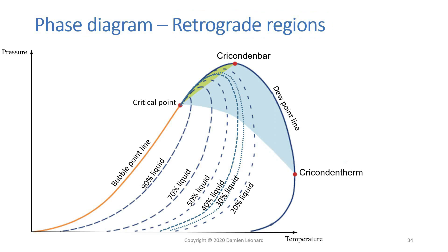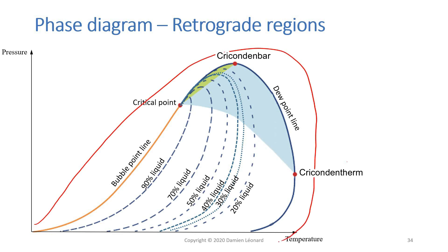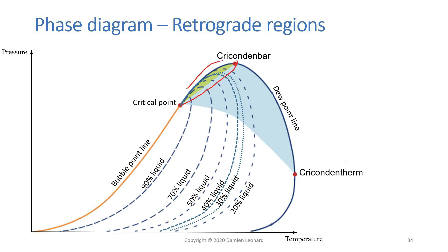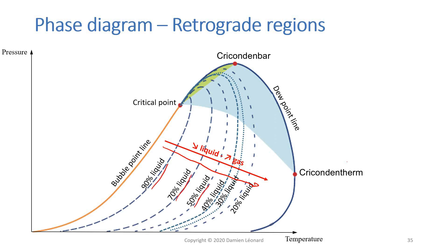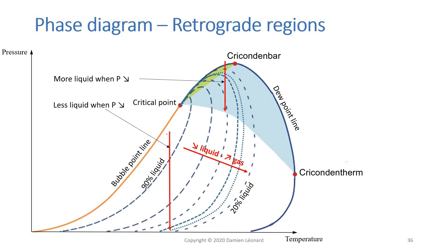If we take a look at this phase diagram that describes the evolution of some hydrocarbons, there are two areas that show retrograde regions. Normally in such a diagram, if your pressure decreases while your temperature increases, you're going to have less and less liquid and more and more gas. If this mixture of hydrocarbons is in your reservoir and the reservoir pressure starts there, as you produce along this line, you get less and less liquid and more and more gas.